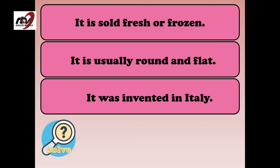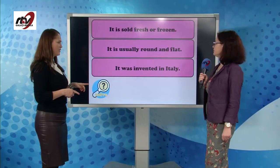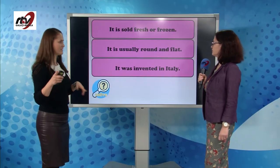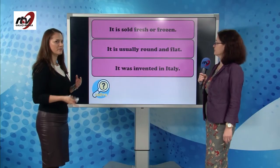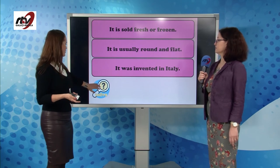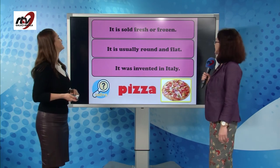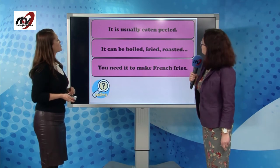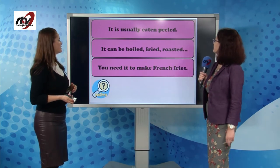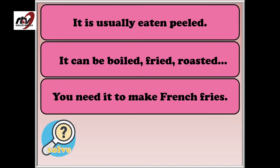It is sold fresh or frozen. It is usually round and flat. It was invented in Italy and probably is one of your favorite types of food. It's the famous pizza. Next: it is usually eaten peeled. It can be boiled, fried, roasted. You need it to make French fries. It's the potato.